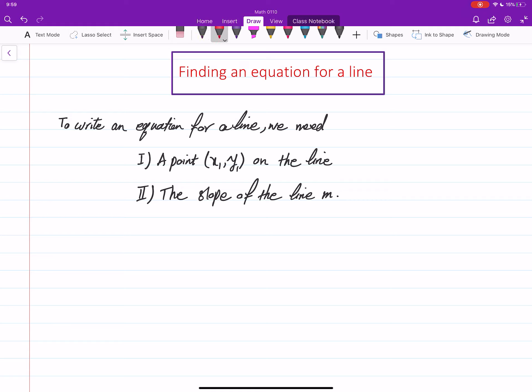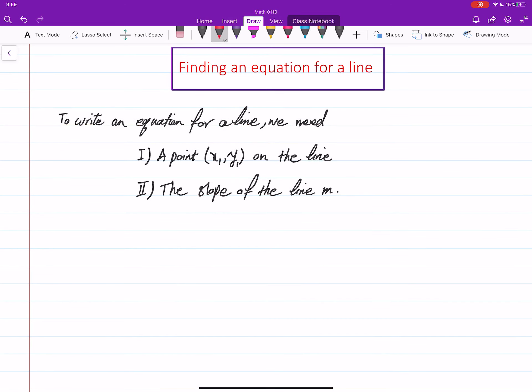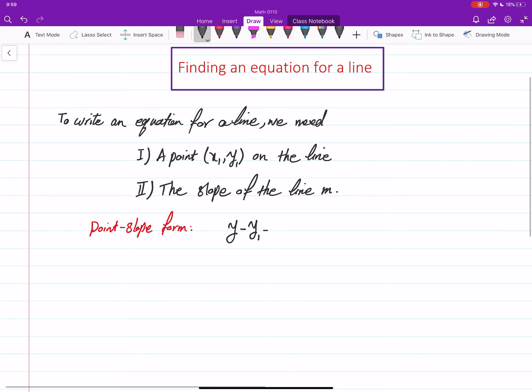When you have this information, then you can write down this form of equation, which is called point-slope form. Which is y minus y₁ equals m times (x minus x₁). And that is the form that we start with. Then we can change it to other forms.